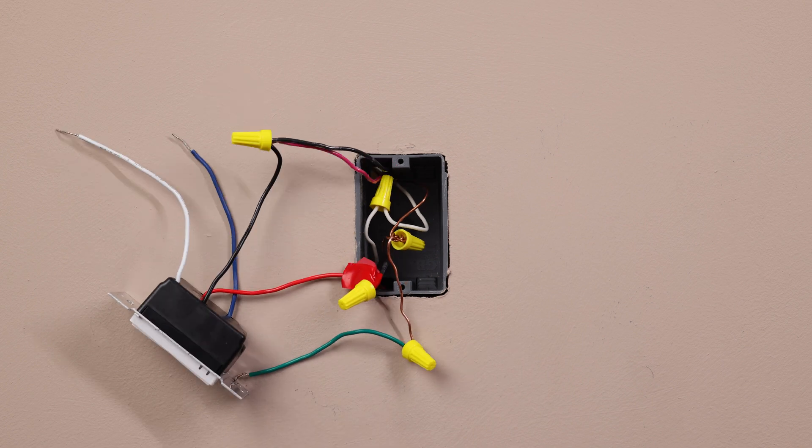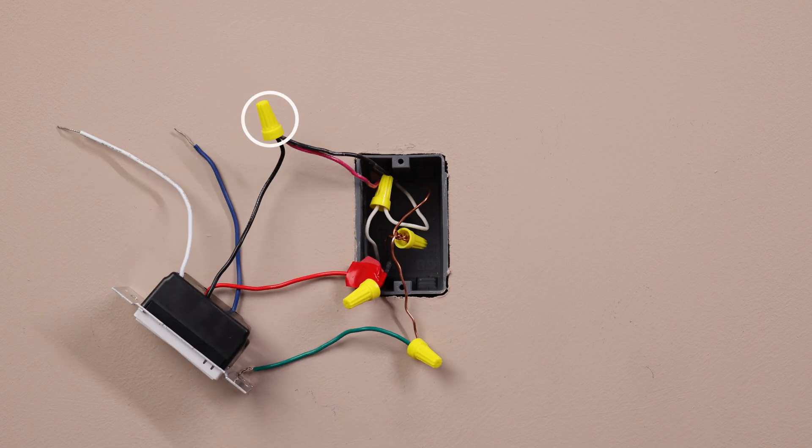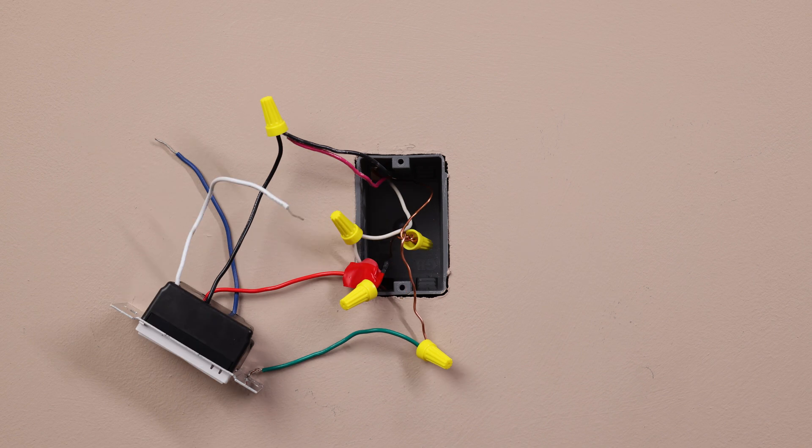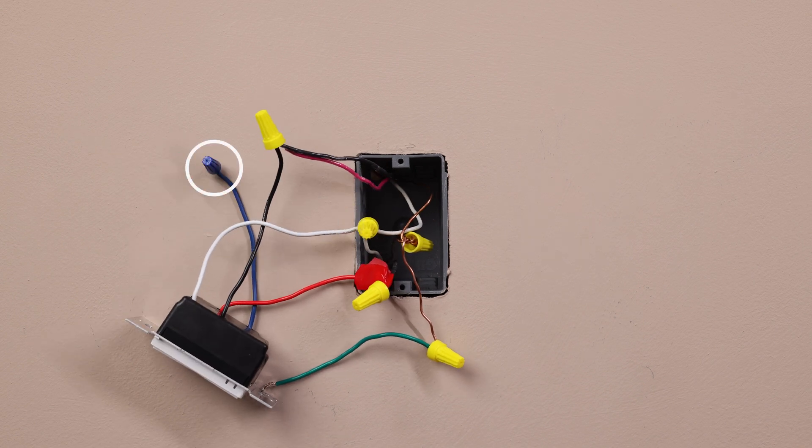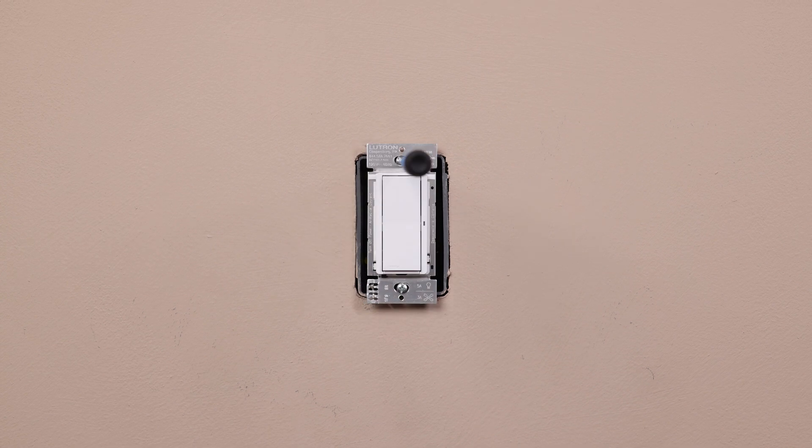Connect the remaining two wires from the wall to the remaining black wire on your new switch. Connect the neutral wires, cap the blue wire, then mount the control and move to the second location.